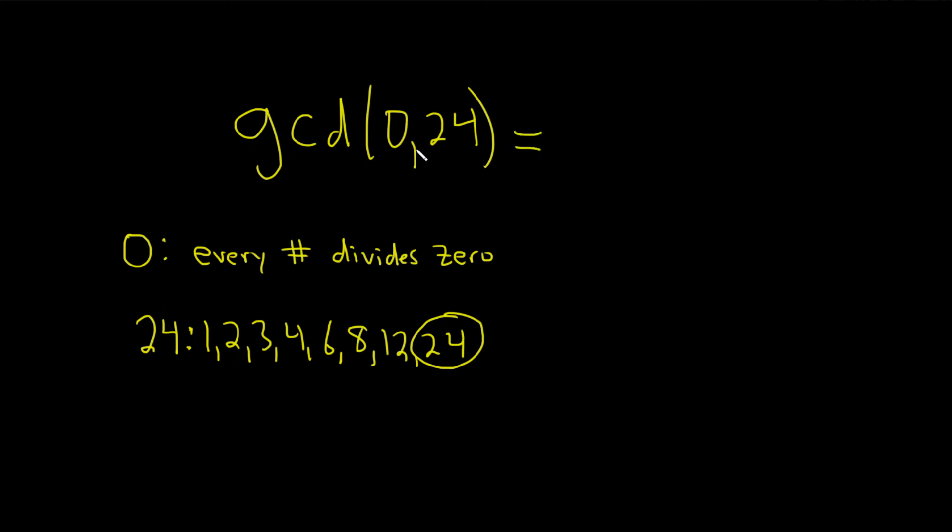Therefore, the GCD of 0 and 24 is 24. I hope this video has been helpful.